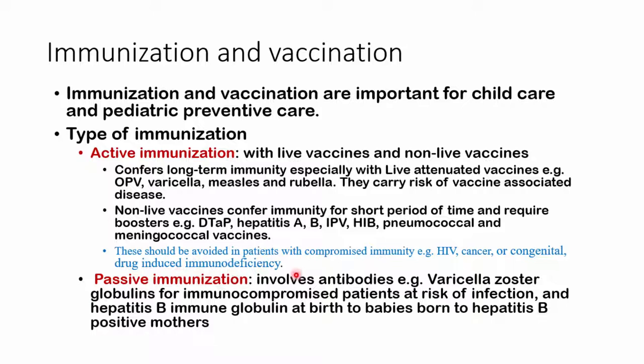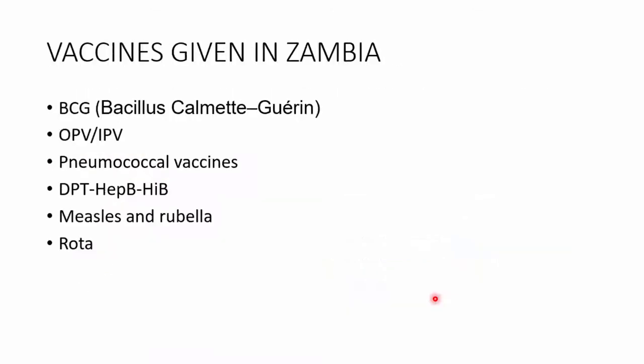With passive immunization, this involves injection of antibodies — for example, injecting varicella zoster globulins in an immunocompromised patient that's at risk of getting the infection. Or perhaps a child that's born to a mother that's hepatitis B positive; we may give hepatitis B immunoglobulins.